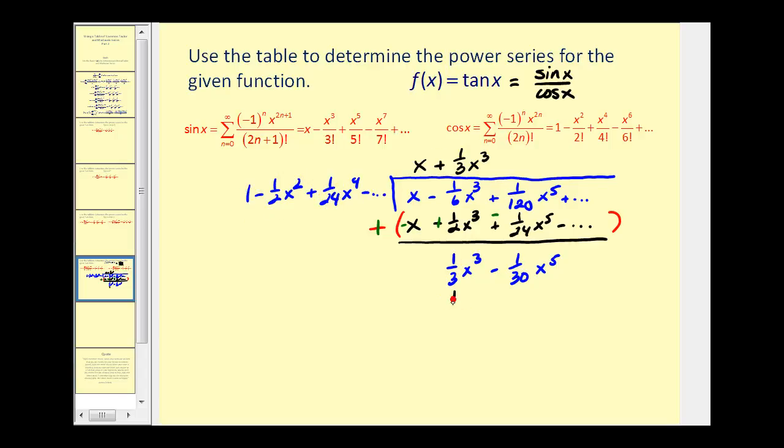So we'll have one third x cubed and negative one half x squared times positive one third x cubed. That's going to be negative one sixth x to the fifth. And we'll go ahead and stop here though we know it does continue on forever in both cases here.